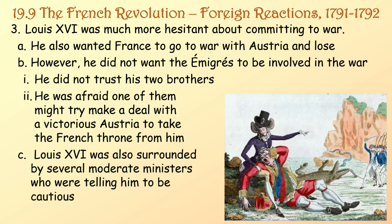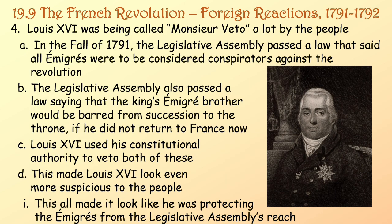Louis XVI was surrounded by several moderate ministers who were telling him to be cautious, and he was being called 'Monsieur Veto' again by a lot of people. In the fall of 1791, the Legislative Assembly passed a law that all émigrés were to be considered conspirators against the revolution, and another saying the king's émigré brother would be barred from succession if he did not return to France. Louis XVI used his constitutional authority to veto both of these, which made him look even more suspicious to the people — as if he were protecting the émigrés from the Legislative Assembly's reach.